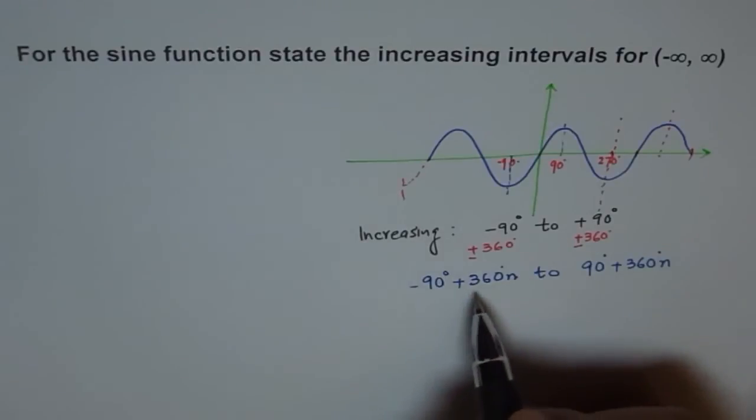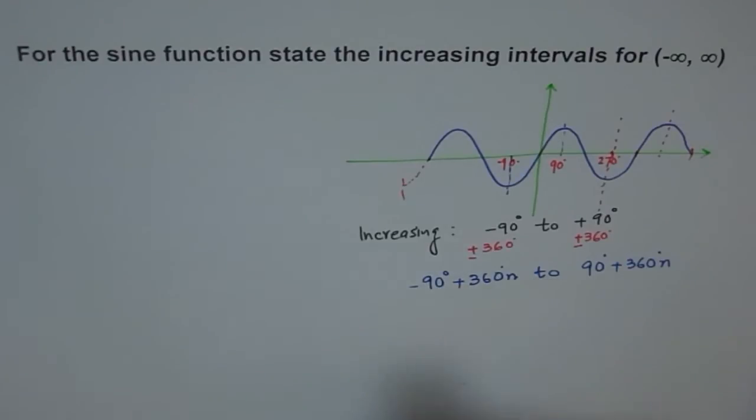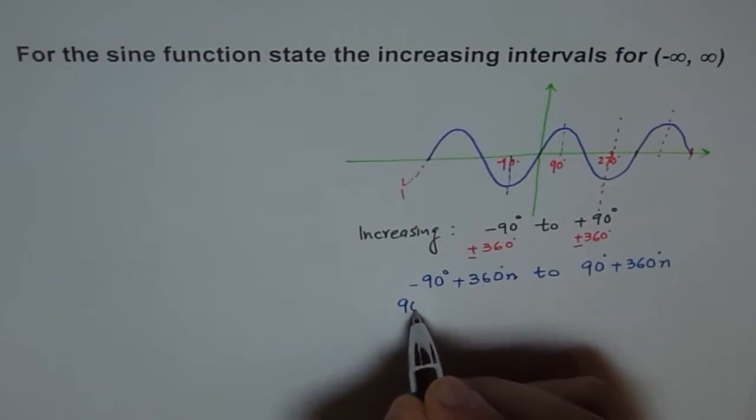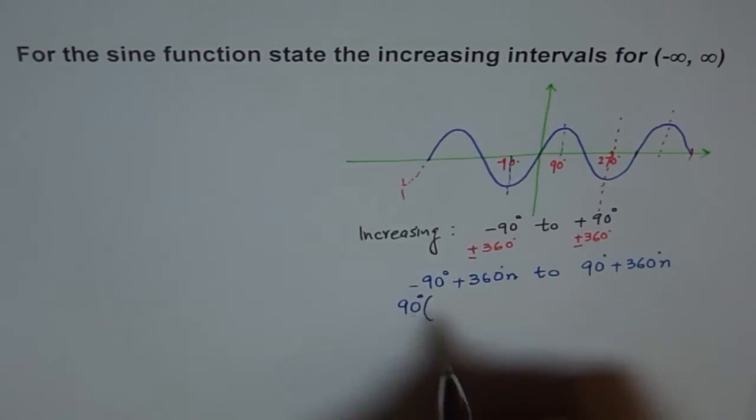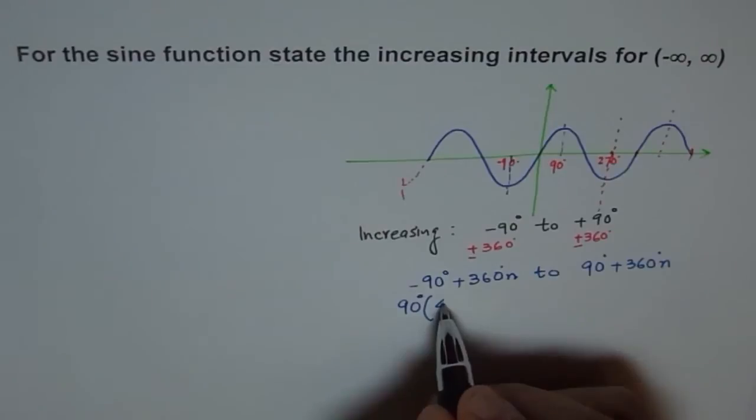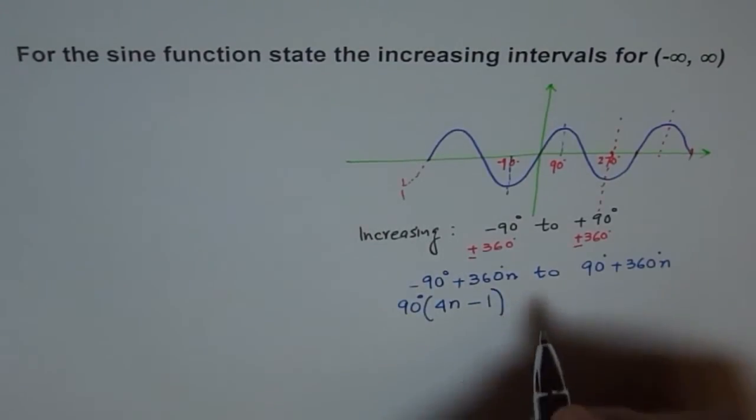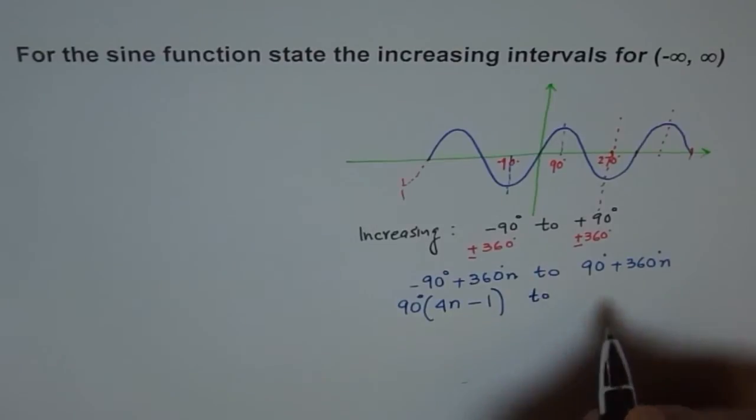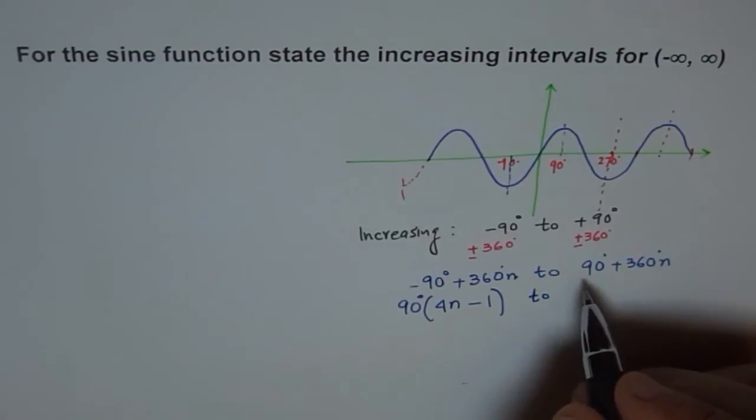Now here you can simplify it. You can take 90 common. So if you take 90 common, what do you get? Let's take 90 common. So we get 90 common, and then, so when we take positive, let me write this first. So this is 4n minus 1.